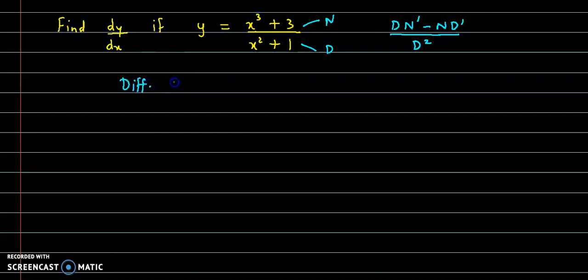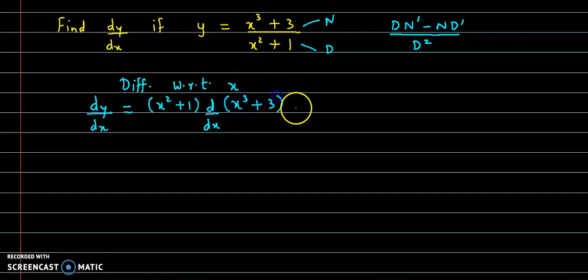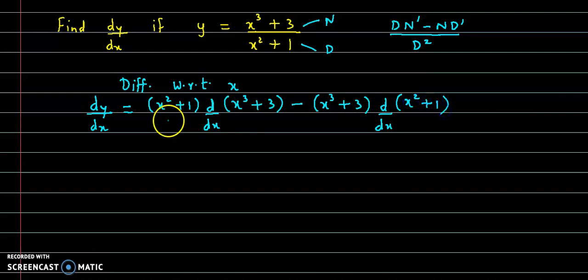So differentiating with respect to x, we get dy by dx is equal to: first, denominator x square plus 1 into derivative of numerator, that is derivative of x cube plus 3, minus numerator that is x cube plus 3 into derivative of denominator x square plus 1, the whole thing divided by denominator square, that is x square plus 1 the whole square.